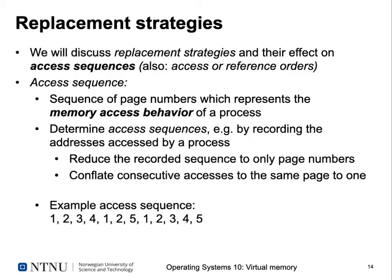We further reduce the recorded sequence by conflating consecutive accesses to the same page (since if all consecutive instructions are in the same page, we don't reload it each time). To investigate different replacement strategies, we look at an example access sequence: page numbers 1, 2, 3, 4, then 1, 2, 5, then 1, 2, 3, 4, 5. The first page accessed is page 1, then page 2, then page 3, and so on.